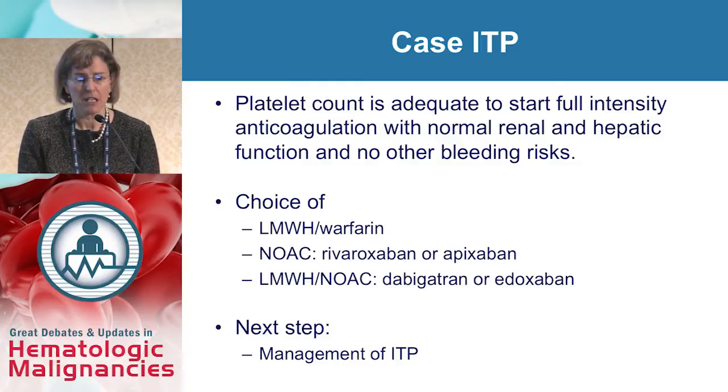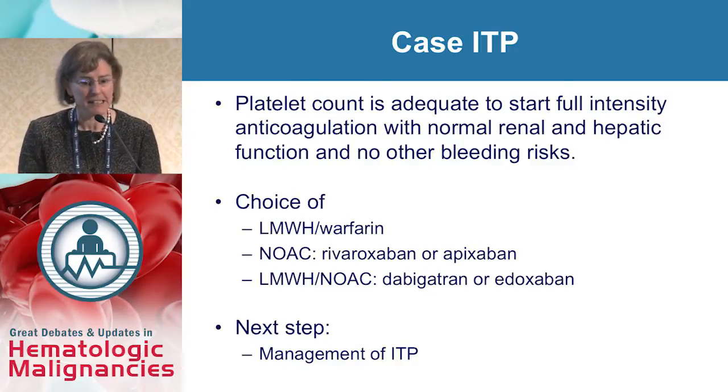Patients with ITP — the urban legend borne out in the lab — have larger, stickier platelets, so the risk of bleeding at a platelet count of 78,000 on anticoagulation is very low. You can use low molecular weight heparin bridged to warfarin, a new oral anticoagulant such as rivaroxaban or apixaban upfront without LMWH lead-in, or if choosing dabigatran or edoxaban, use a five-day LMWH lead-in before switching. Both rivaroxaban and apixaban are approved to treat VTE.